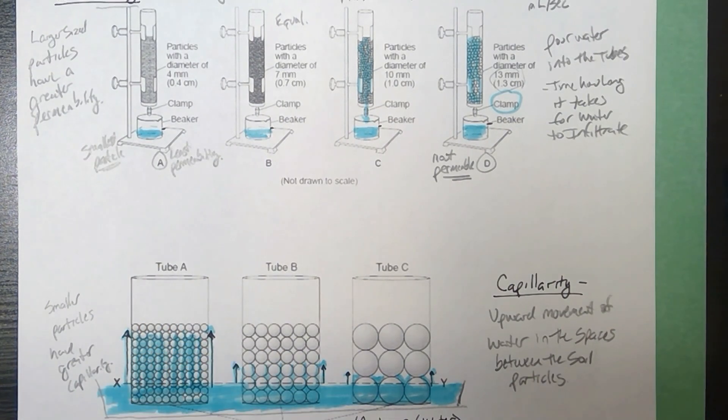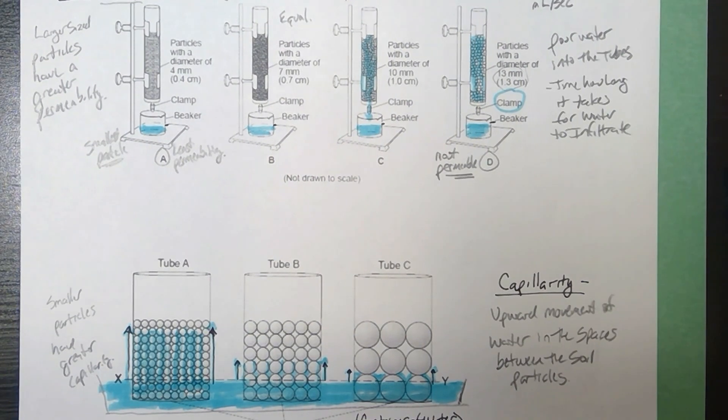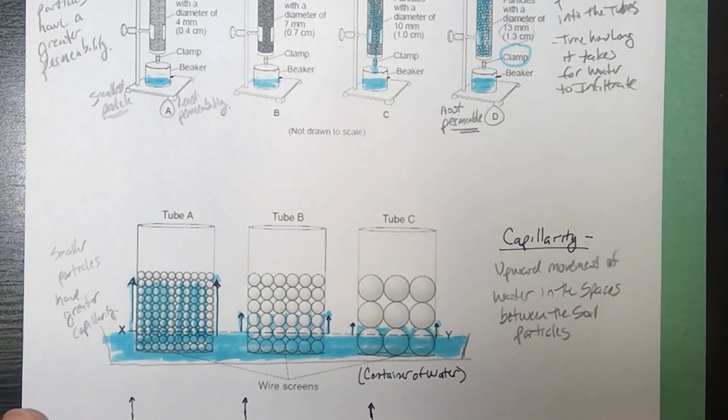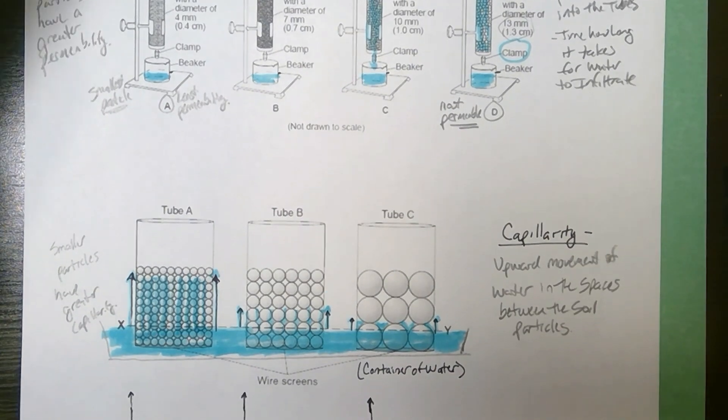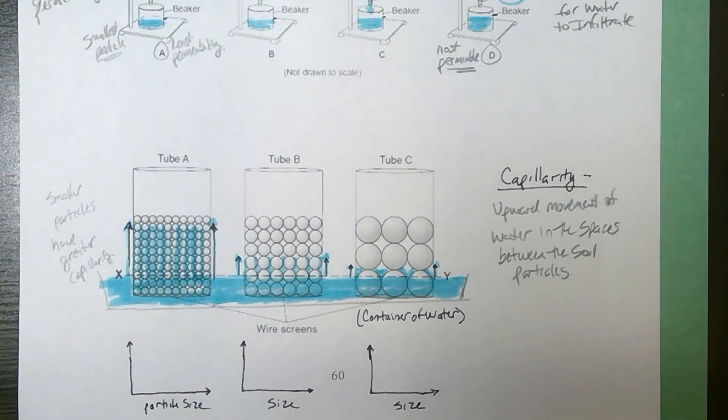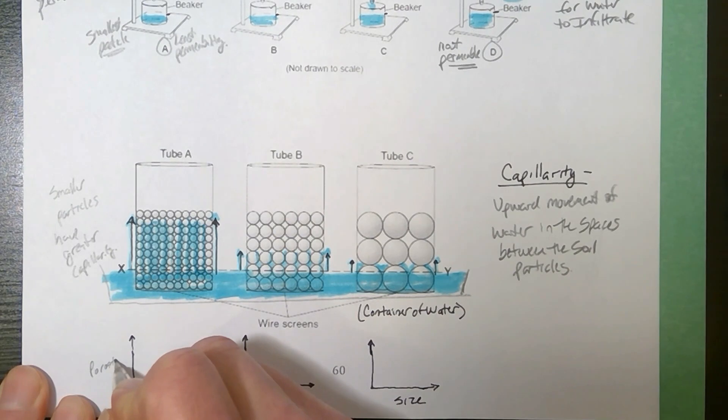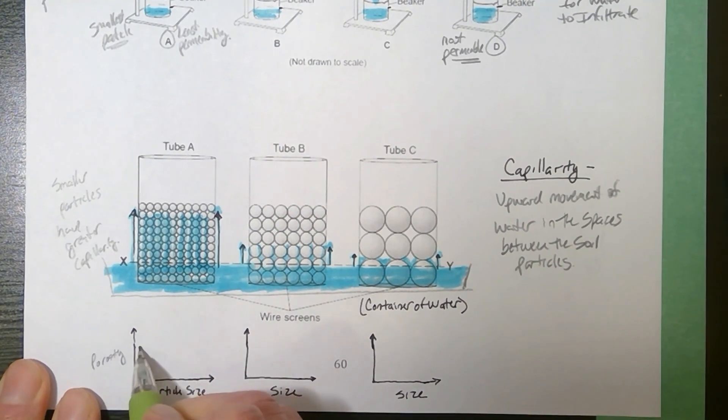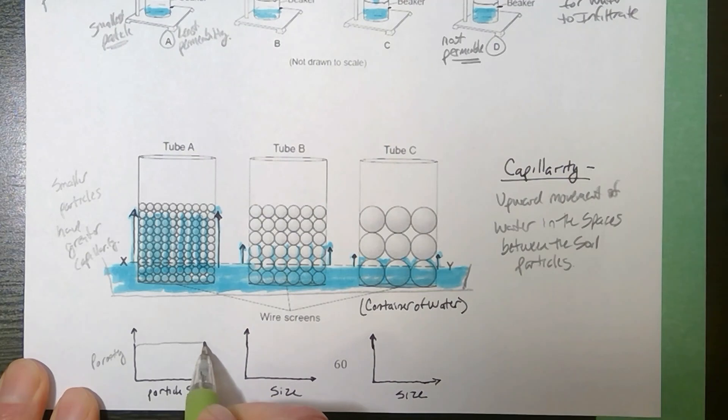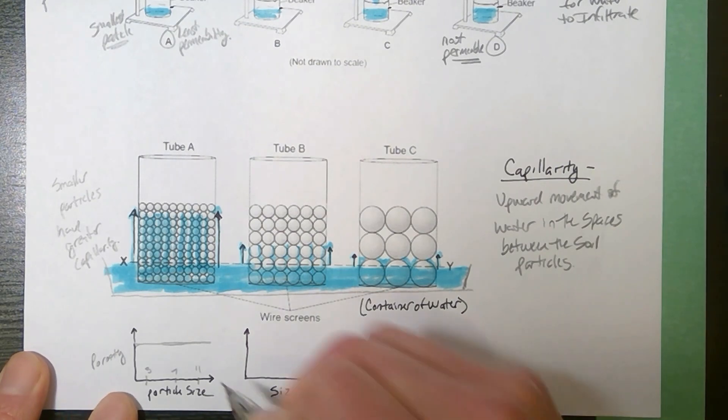Alright, so to summarize what we saw with these diagrams, one thing they typically ask you about is how does size affect each one of these quantities. So if you're looking at it, if you look at porosity, porosity is the percentage of empty space, and size makes no difference. So for porosity, it's a constant relationship. If I have 3, 7, or 11 millimeter beads, they would all have the exact same porosity.